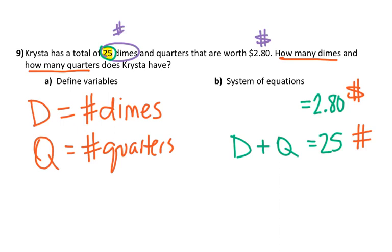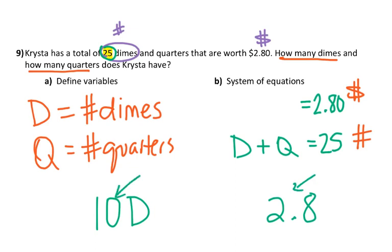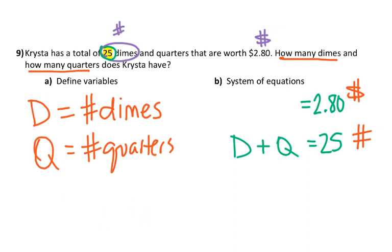A dime is worth $0.10, so you write 0.10d. A quarter is worth $0.25, so you write 0.25q. A common mistake is writing 2.80 on one side but 10d instead of 0.10d — that would mean $10 is a dime, which is wrong. You can also do everything in cents — then instead of $2.80, you'd write 280. Either way is fine, just be consistent. So the value equation is: 0.10d plus 0.25q equals 2.80. There's your system.